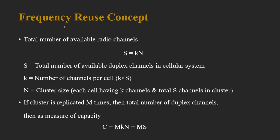Now we discuss an important relationship between the total available radio channels and the cluster size. The total number of available radio channels S is given by S = k × N, where S is the total available duplex channels in the cellular system, k is the number of channels per cell, and N is the cluster size. For example, if S=28 and each cell needs at least 4 channels, then the required cluster size is 7.